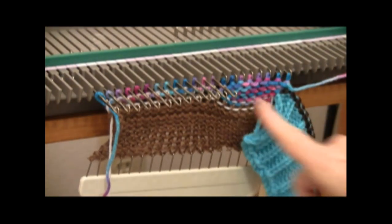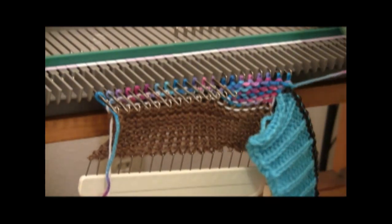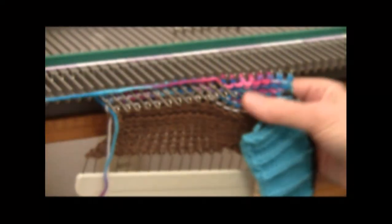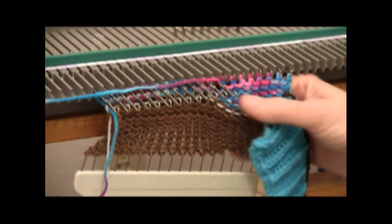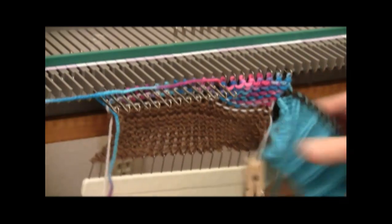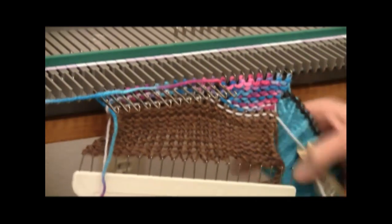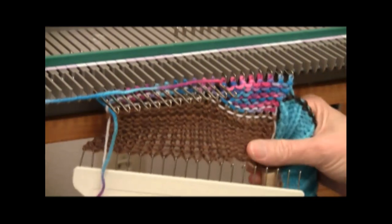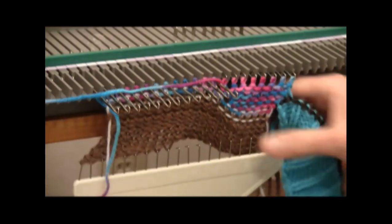Now I'm going to knit to the left again. These extra procedures are always done on the left. Now as this starts to get longer on this side, I need to move my weight. So what I do is I just kind of tug this comb and pull it down over here.